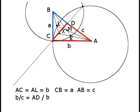If we denote small letters a, b, c to be side lengths of triangle ABC, then from the red triangle we can obtain the proportion b/c = AD/b.